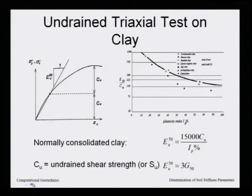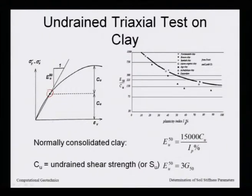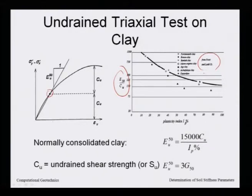For undrained triaxial test on clay, the stress-strain curve gives EU50 — the modulus at 50 percent of failure stress, taken as the slope of the tangent at that point. From EU50 you can find EU (undrained strength modulus). This EU50 is determined by correlations given by Lade: E50/Cu versus plasticity index IP, where IP = liquid limit minus plastic limit.